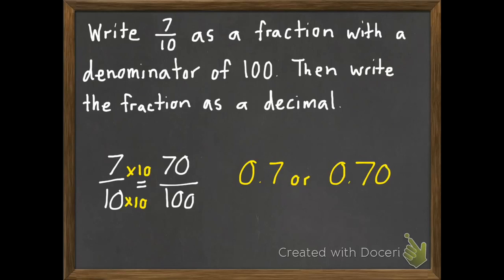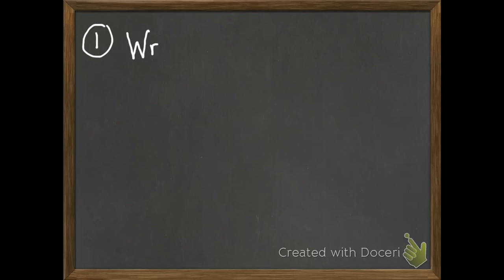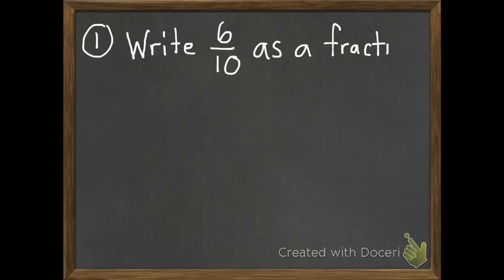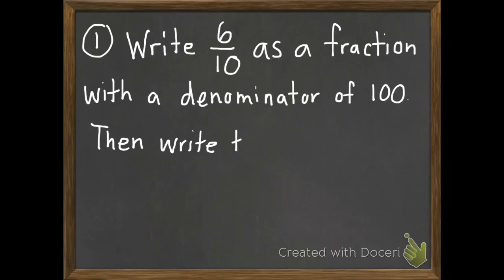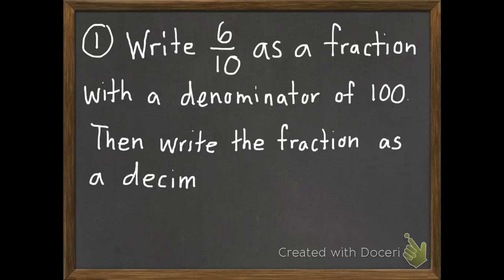Here are four problems to bring to class tomorrow. Number one: write six tenths as a fraction with a denominator of one hundred, then write the fraction as a decimal. Number two: write five tenths as a fraction with a denominator of one hundred, then write the fraction as a decimal.